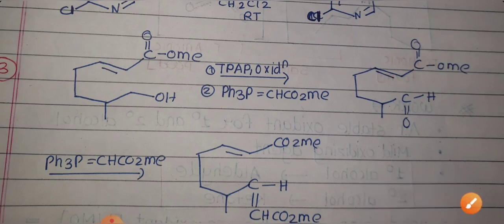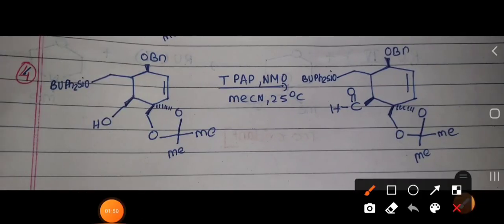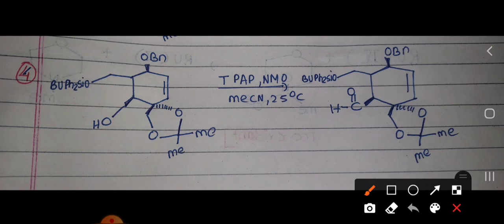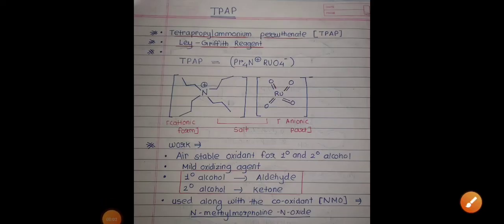The next example is taken from the book by Carruthers. Here a TPAP and NMO reagent combination is used with a large complex molecule. If you don't know the role of this reagent, you would be unable to solve this example. However, the answer is straightforward: the primary alcohol in the molecule gets converted to the aldehyde, and all other functional groups remain intact.